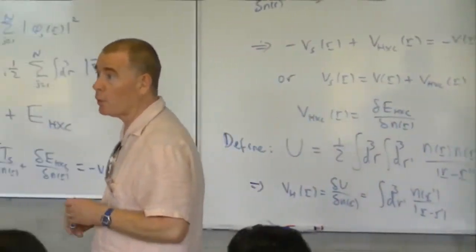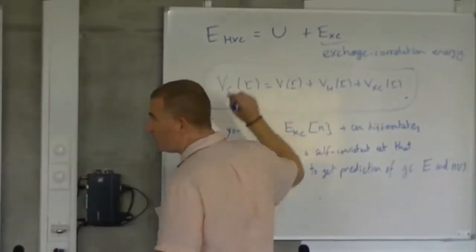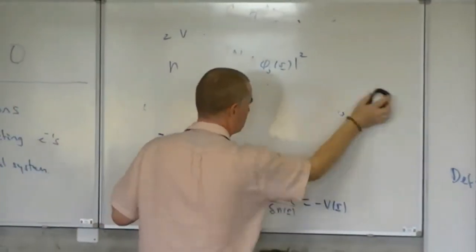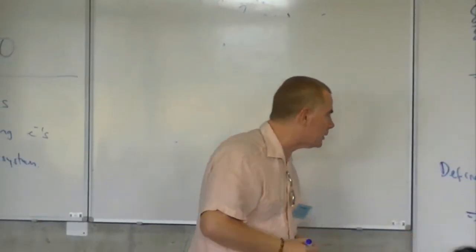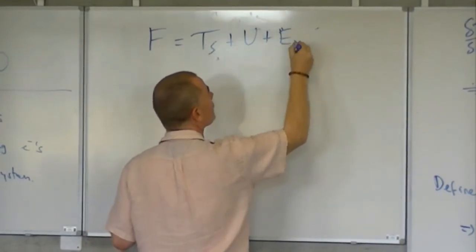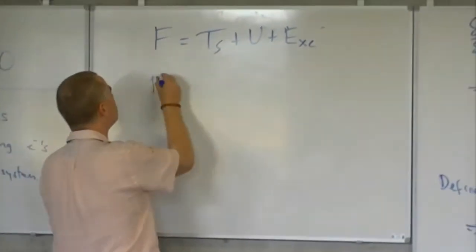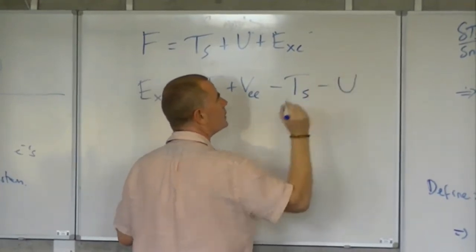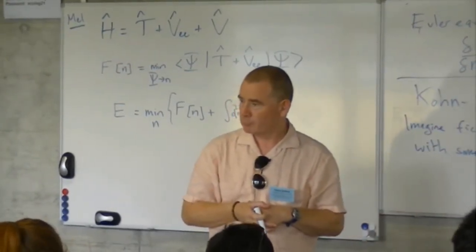Now in the special case where you use the exact exchange-correlation energy — which you define by this difference — we have F equals TS plus U plus EXC. So we use that as the definition of the exchange-correlation energy. It's the difference between the exact kinetic energy and the exact electron-electron repulsion minus TS minus U.